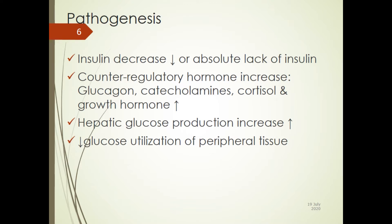Because glucose cannot enter the cells, counter-regulatory hormones increase — glucagon, catecholamines, cortisol, and growth hormone. These all work together to increase glucose levels. This triggers more glucose production. Already there was enough glucose in the extracellular space, so producing more increases it even further. There is also hepatic glucose production and reduced utilization of glucose by peripheral tissues.